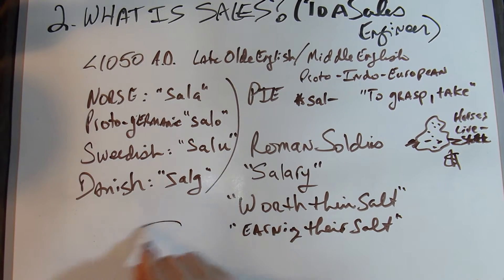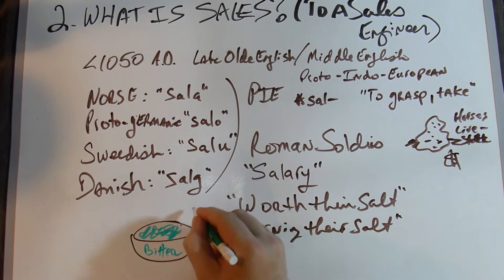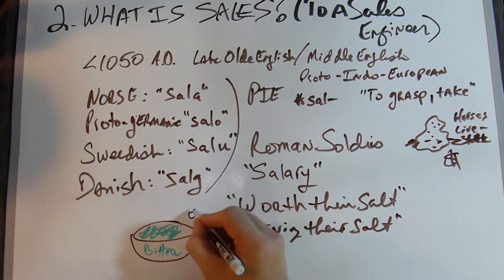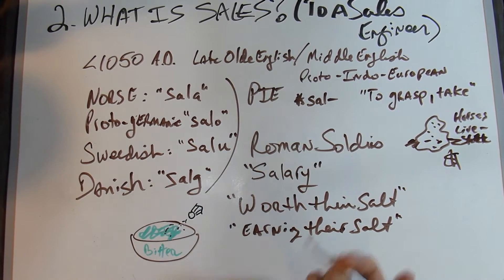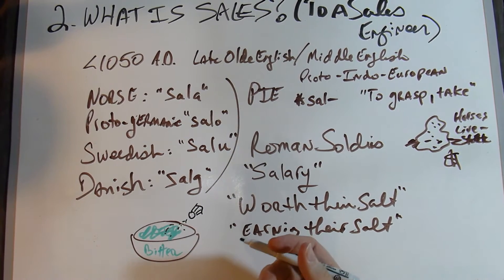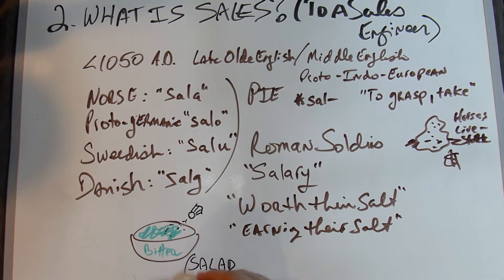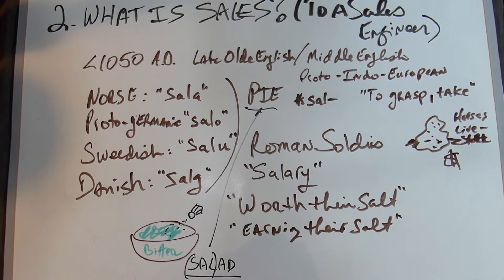They're talking about the value of salt, which is kind of where we get sales from. Interestingly, the Romans, when they had their greens, these were really bitter. And what they did was they used salt, and the salt would work with the greens to make them a little bit less bitter. And this is where we get the word salad. Again, the root being sal. So this is where all this comes from.